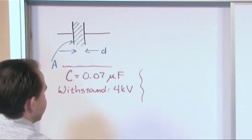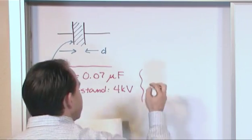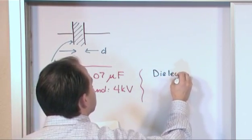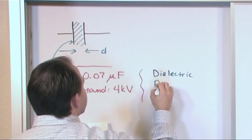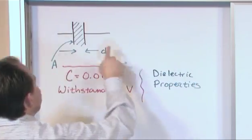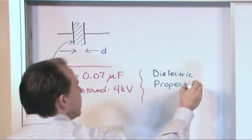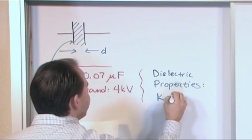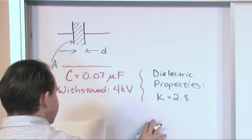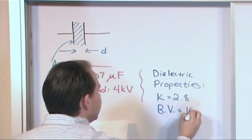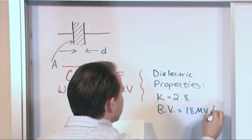The dielectric properties of whatever we have here, which is the stuff we're sticking in between the capacitor here, is that the dielectric constant is 2.8 and the breakdown voltage, so I'll label it BV, is 18 megavolts per meter.